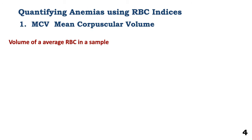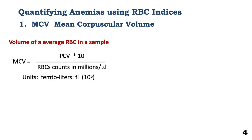MCV is defined as the volume of an average red blood cell in a sample. It is calculated by the PCV in percent times 10, divided by the red blood cell counts, which are given in millions per microliter.